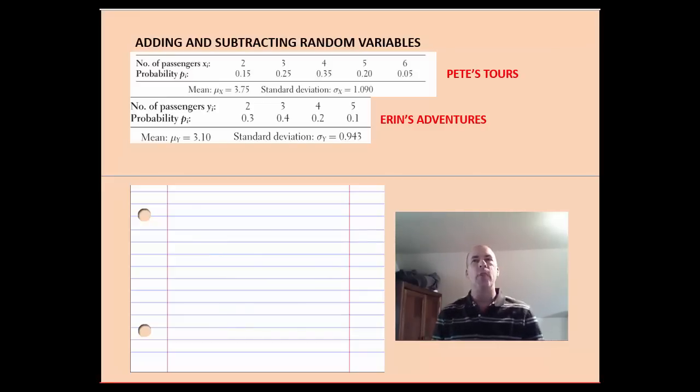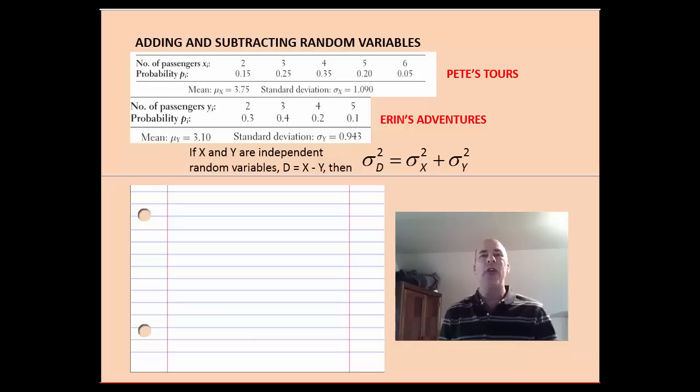So next, I want to consider a case where I might want to subtract these two distributions. What if I were to know, on average, how many passengers Pete's Tours has more than Erin's Adventures on a daily basis? Well, the means, it seems like I should be able to subtract those, and I can. You can subtract means just like you can add means. But standard deviation is a little bit trickier. Now, we're going to do some examples in class that will show why this is true, but when you're subtracting distributions, you still add the variances. Variances always add, and that might seem a little counterintuitive at this point.